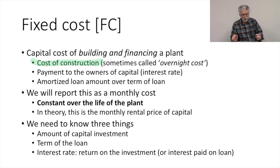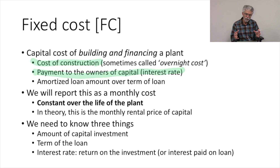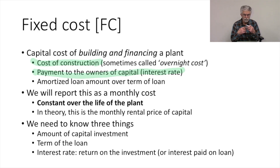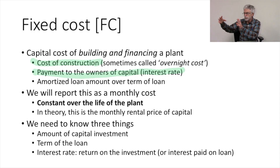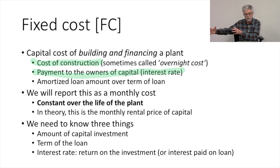We also have to think about the payment to the owners of capital, because in order to build the plant, we have to borrow money from someone, and they need a rate of return on their investment. The payment to owners of capital is the interest on the capital that we borrow to build the power plant for those overnight costs. The interest rate is the payment to the owners of capital to induce them to invest in our power plant rather than invest it in something else.